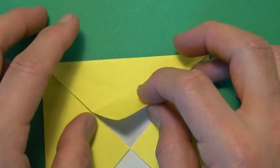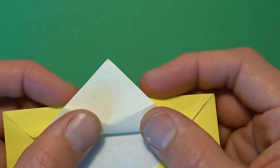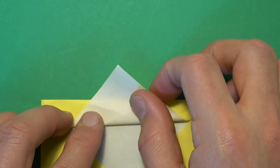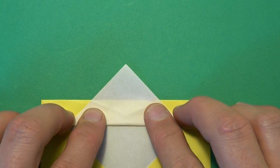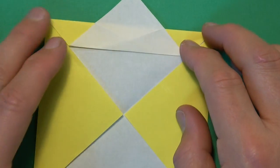And unfold. And fold the flap up so that the two crease marks align with this edge. Like that.